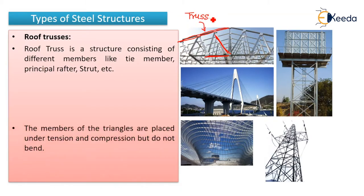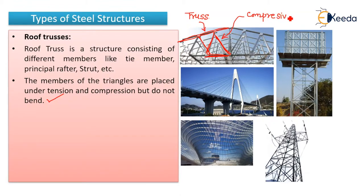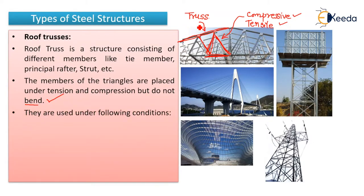The members forming the triangles are placed under tension and compression but do not bend. This point is very important — these members which are forming the triangles will only carry either compressive force or tensile force. So the structure is purely axial: it will either carry compressive force or tensile force. No bending moment will be carried by these trusses — that is the main property of roof trusses.